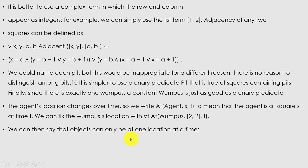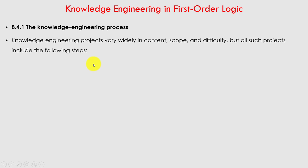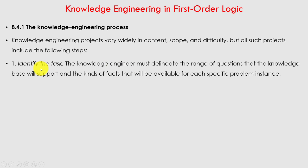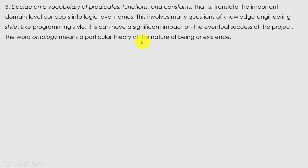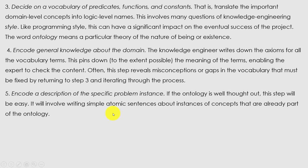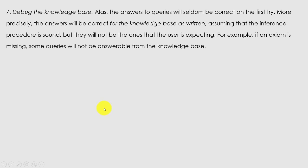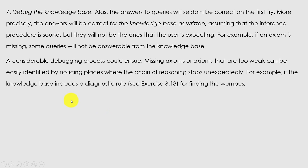The next point is knowledge engineering in first-order logic. The knowledge engineering process varies widely in content, scope, and difficulty, but all such projects include the following steps: first, identify the task; second, assemble the relevant knowledge; third, decide on a vocabulary of predicates, functions, and constants; fourth, encode general knowledge about the domain; fifth, encode a description of the specific problem instance; sixth, pose queries to the inference procedure and get answers; seventh, debug the knowledge base.